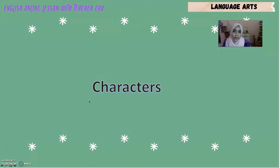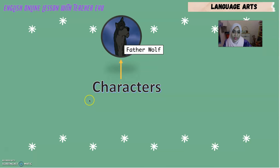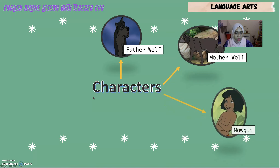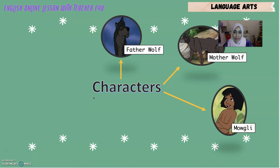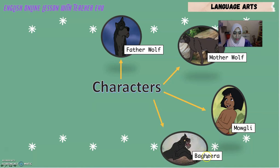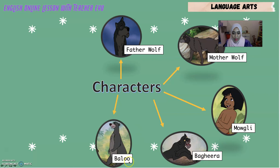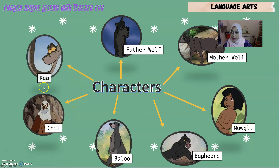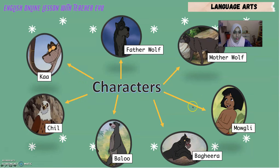Now let's talk about the characters in the story. Characters means watak. The first character is Father Wolf, next we have Mother Wolf, then Mowgli — Mowgli is the main character, watak utama dalam cerita ni. Then we have Bagheera the panther, Baloo the bear, Chill the bird, and lastly Kaa the python. So these are the characters in the story of Mowgli.